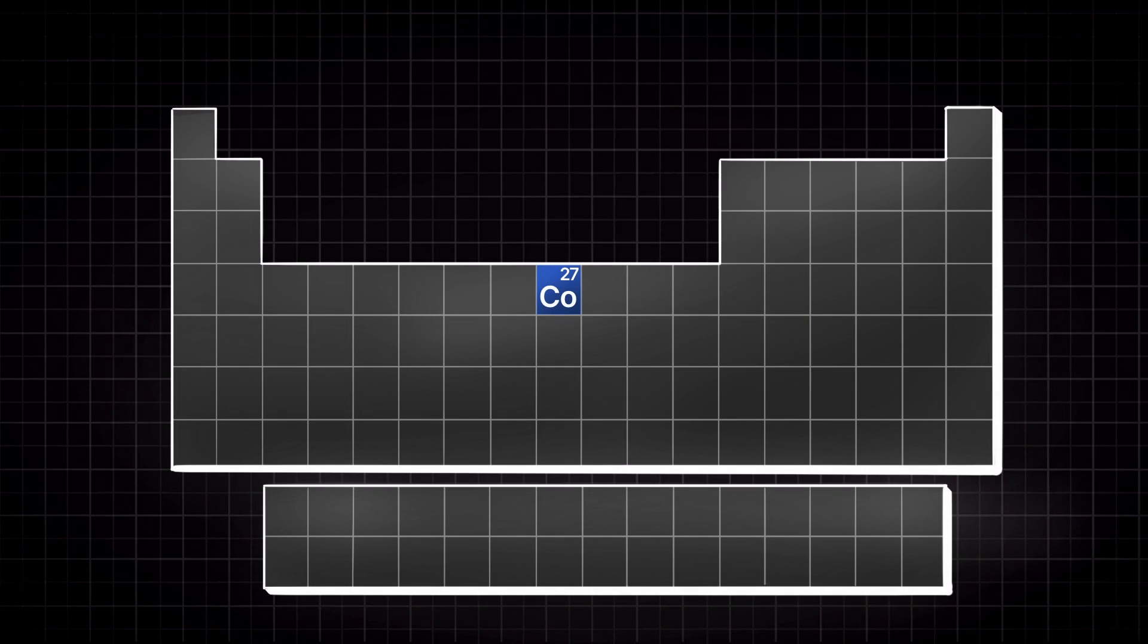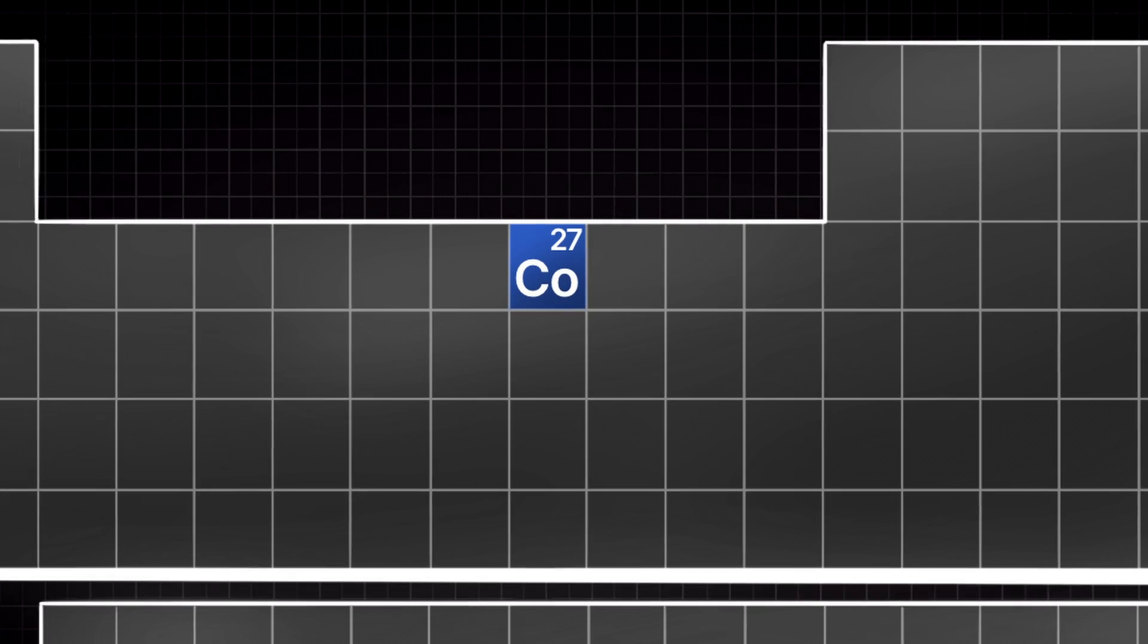So, to solve this, the first thing we need to do is look at our periodic table and see how many electrons a cobalt atom actually has in its ground or unexcited state.